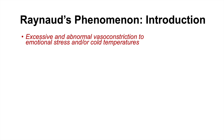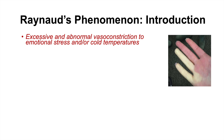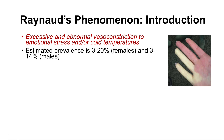Raynaud's phenomenon is essentially an excessive and abnormal vasoconstriction to emotional stress and/or cold temperatures. Here is a picture of Raynaud's phenomenon occurring where you can see some of the digits on the hand becoming very pale. The estimated prevalence is about 3-20% in females and 3-14% in males. It's quite varied, as diagnostic criteria differ between different areas and many individuals might not present to the healthcare system.